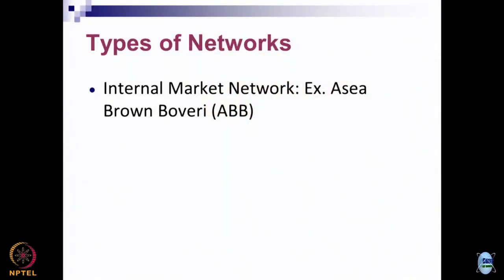Networks can be of various types. An internal market network is where the organization is built around many small business units. One example is ABB, which predominantly operates in segments like robotics, modern electronics, and telecommunication. ABB has more than 1,000 subunits and more than 4,000 profit centers. These subunits and profit centers keep interacting and having business relationships with each other, which is how the whole organization operates across sectors and different areas of expertise.